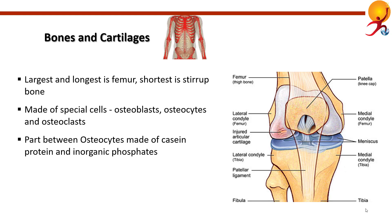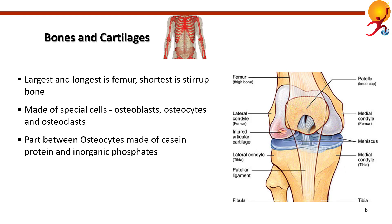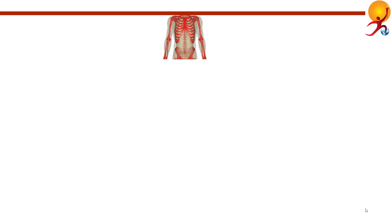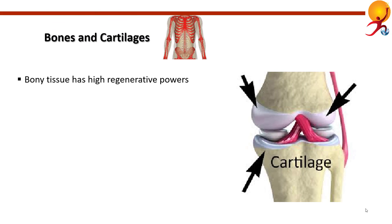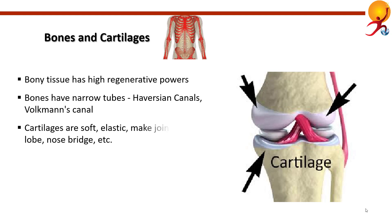Bony tissue is highly vascular and has great regenerative power. The only tissue with greater regenerative power than bony tissue is blood. Bones have narrow tubes called Haversian canals and Volkmann's canals, apart from a network of blood vessels.